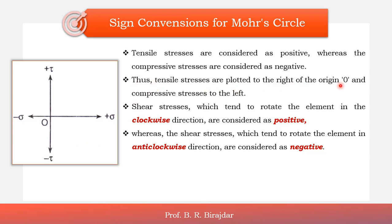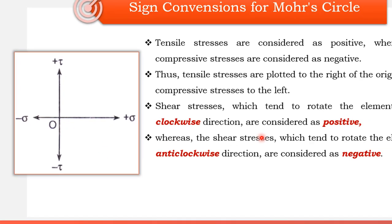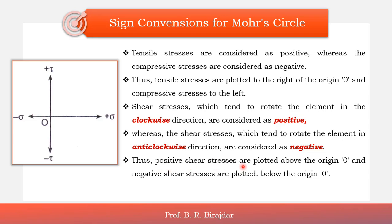Tensile stresses are plotted to the right of the origin O and compressive stresses to the left. So on the horizontal axis, if the normal stress sigma is positive, we plot it to the right of the origin; if negative, to the left. If the shear stress is positive, we plot it above the origin O; if negative, below O.